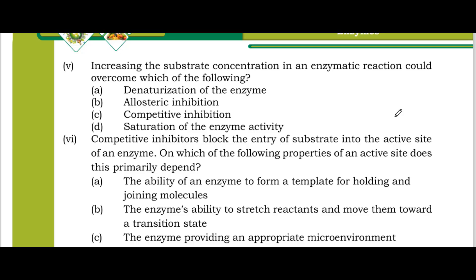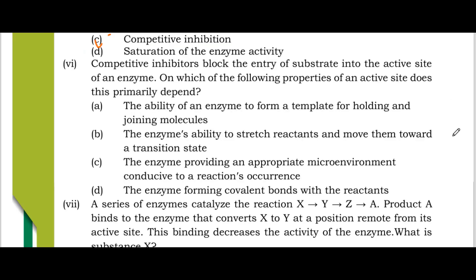What comes from an enzymatic reaction that can be overcome? Competitive inhibition can be overcome. Competitive inhibitors block the entry of substrate into the active site of the enzyme. Which of the following properties of an active site does this primarily depend on?